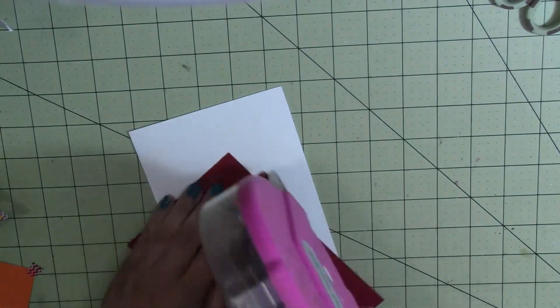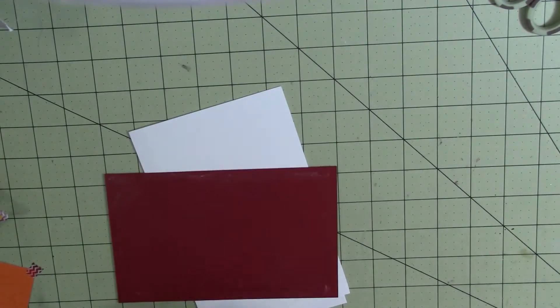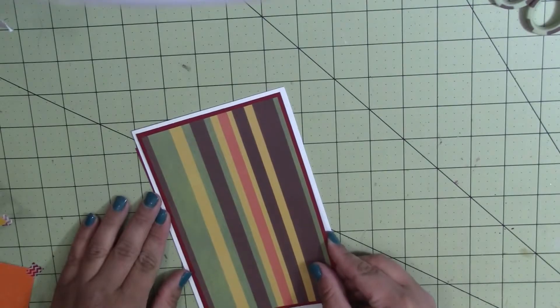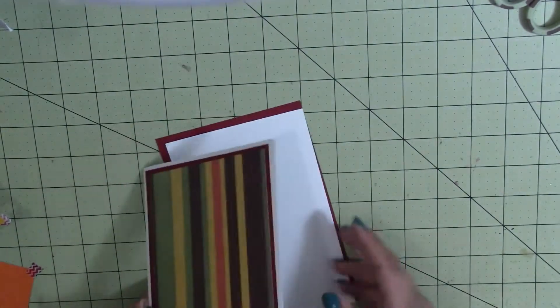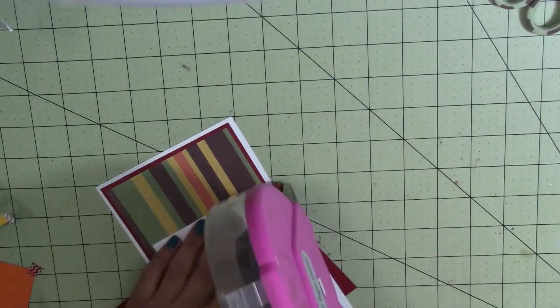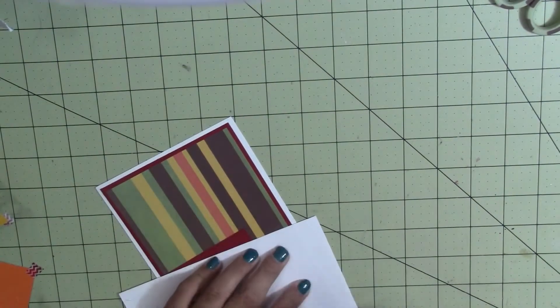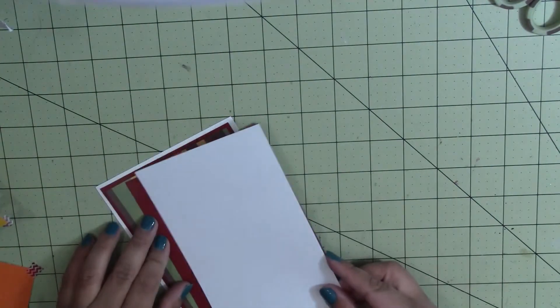So, I'm just going to adhere my layers together. I'm using some pattern paper from the All Seasons stack from the Paper Studio. It's an old one. I'm pretty sure you probably can't get it anymore. But, it's been hanging around and it's time for it to go. So, I'm using it.